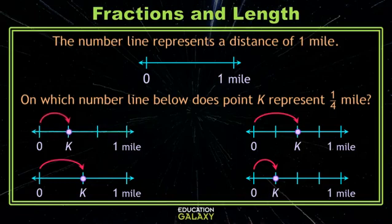In our first answer choice, the space between 0 and 1 mile is split into three equal sized parts. And our point K is on the first of those three tick marks, which means it represents 1 third mile.